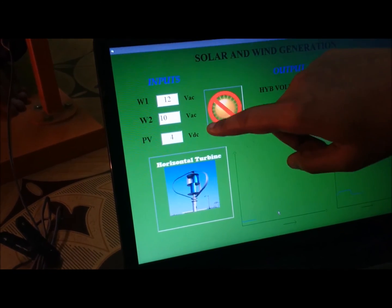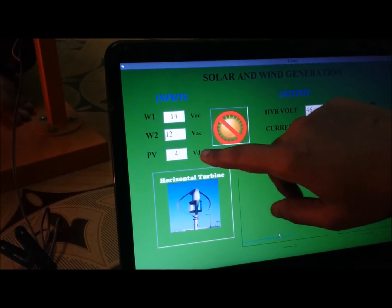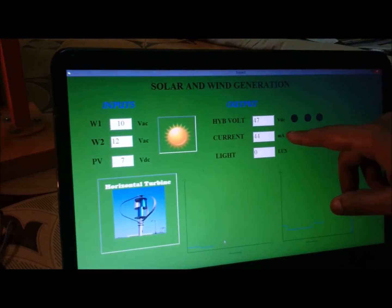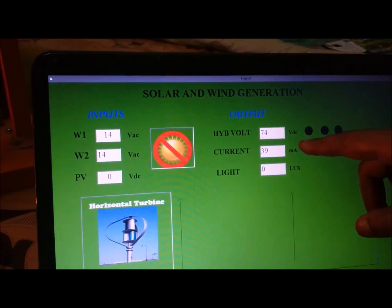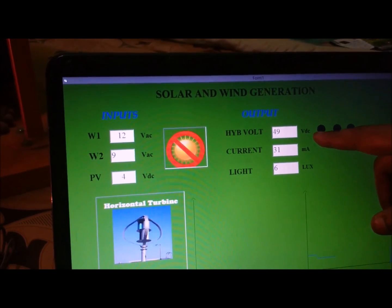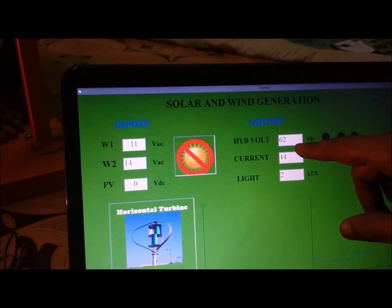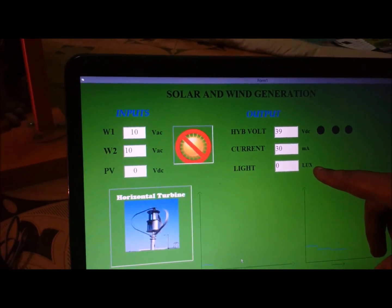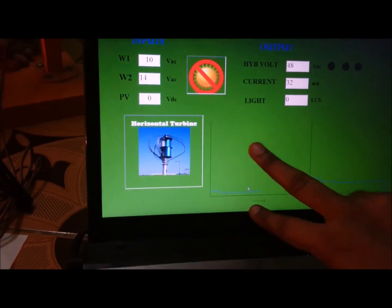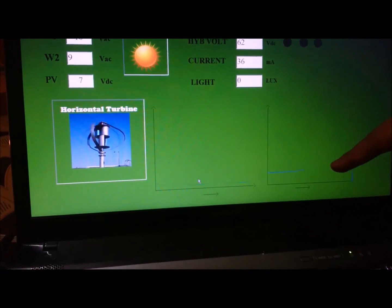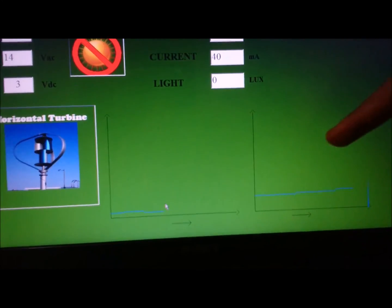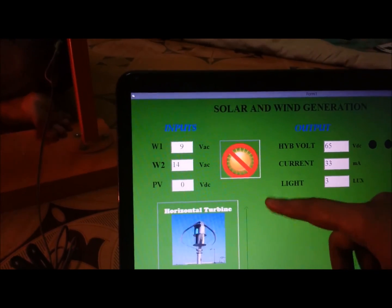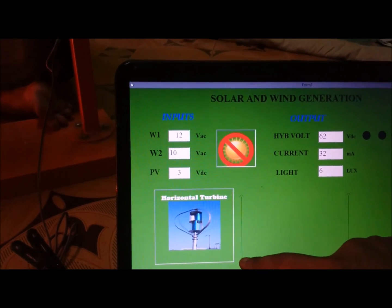From the solar panel we are getting DC voltage. Here is the hybrid volt where we are converting both to DC voltage which is showing the output. This is the current sensor and this is the light sensor. These are the two graphs of both solar and wind with certain outputs. These are glowing with the rotation of the wind turbine.